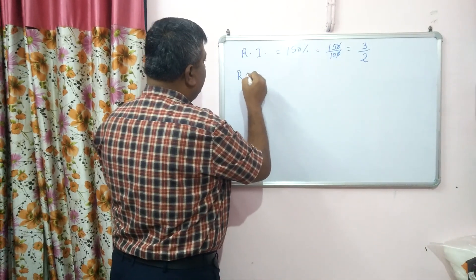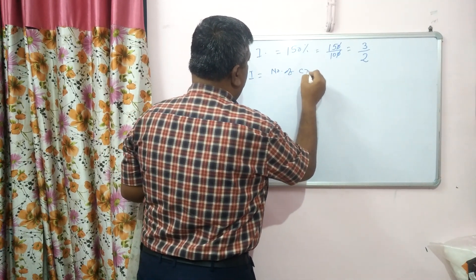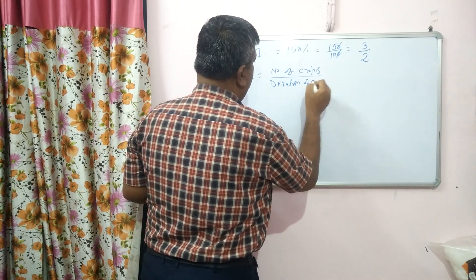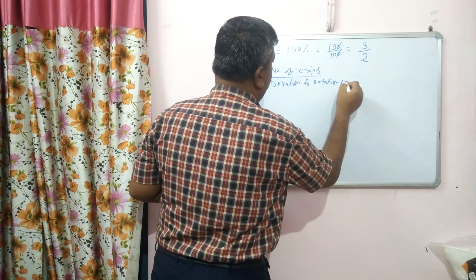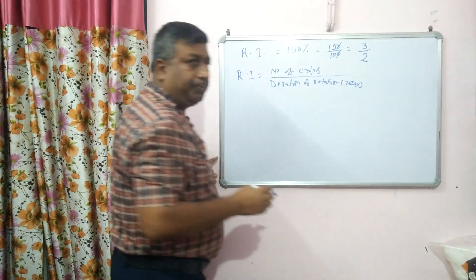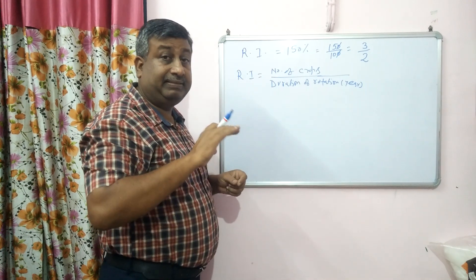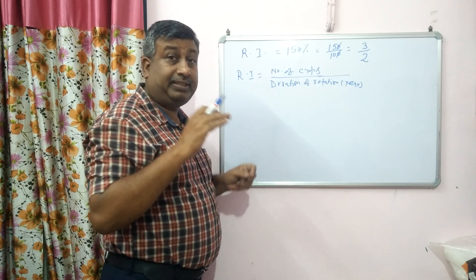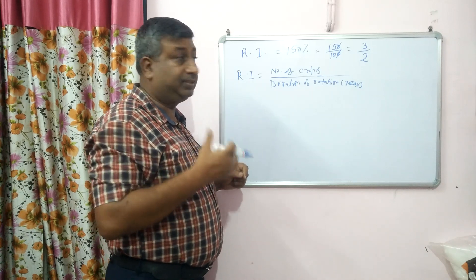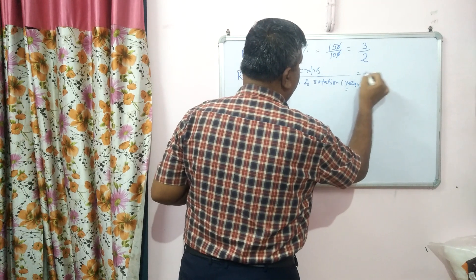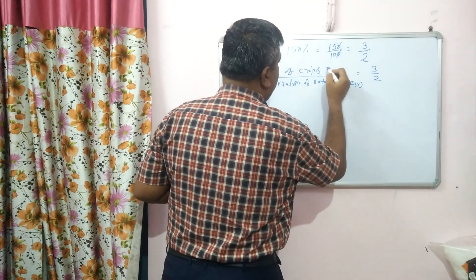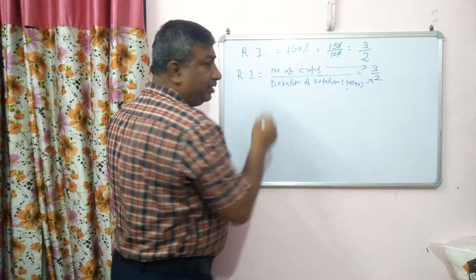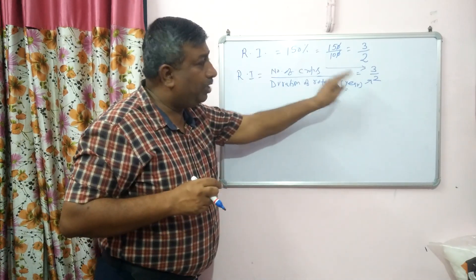Rotation intensity equals number of crops divided by duration of rotation in years. The duration is always expressed in years — if rotation is 10 months, it is considered 1 year; if 8 months, it is 1 year; if 14 months, it is considered 2 years. So if we get 3 upon 2, it means 3 crops are grown in 2 years.